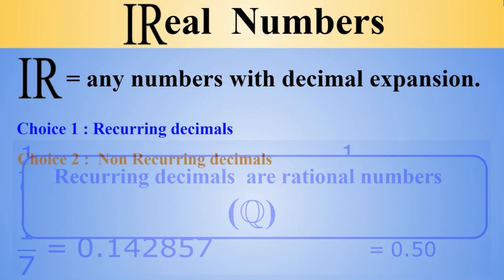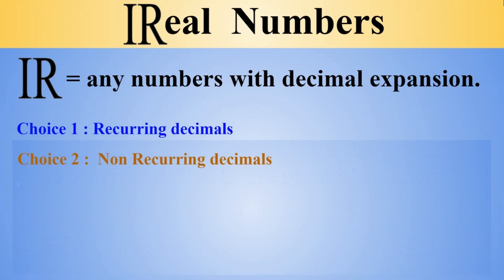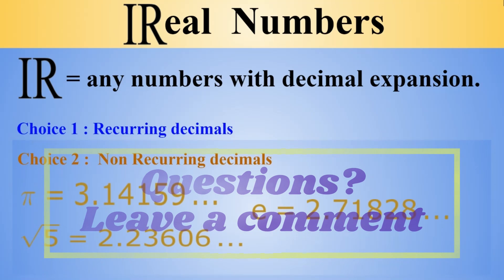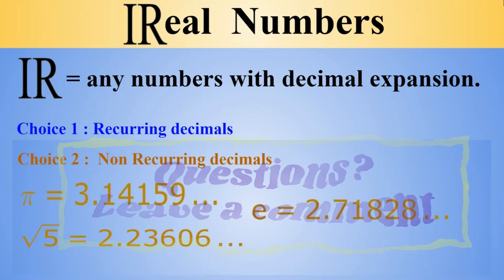Now, another class of numbers, which is our second choice for the decimal expansion, is that we do not have any repetition here. And numbers of this form tend to be like pi, which is 3.14159 and this goes on forever. Square root of 5, which is another kind of these numbers, that goes on forever, 2.23606. Another kind of number, say Euler number E, which is 2.71828.